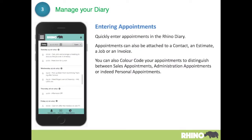You can enter appointments, including repeating appointments — so if you had a meeting every week. You can colour-code appointments, and you can also make this diary visible on your iPhone calendar, which means you can see your business and your personal appointments side by side.